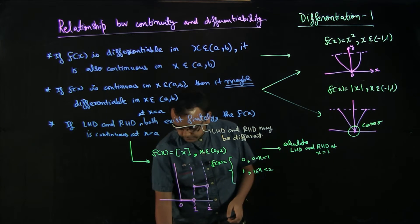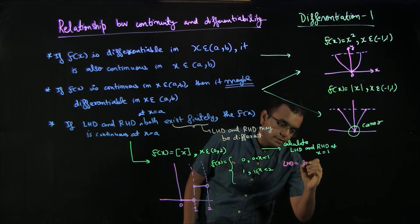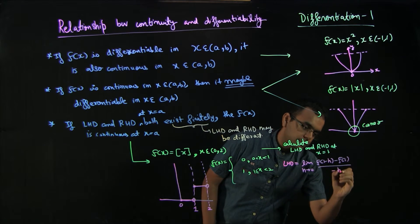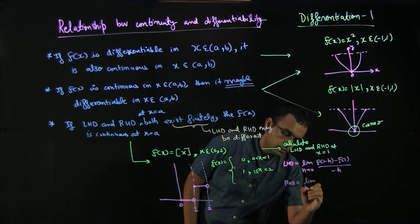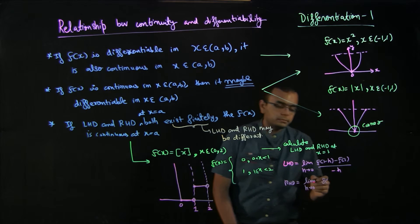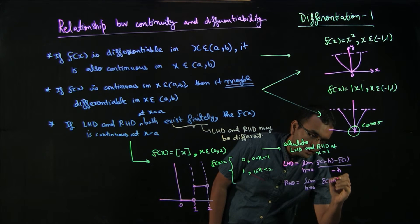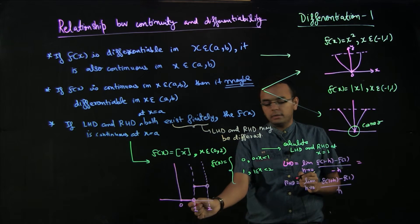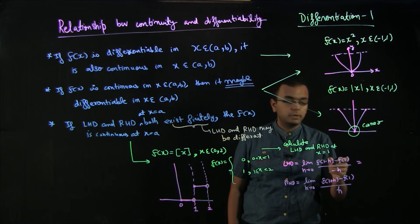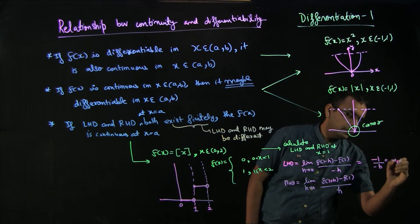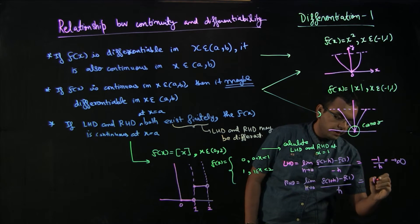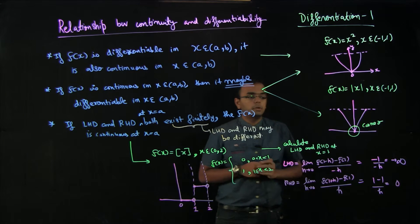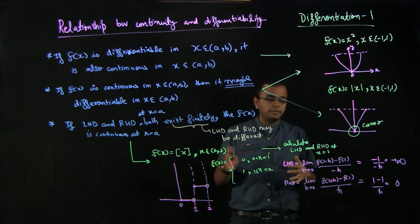LHD = lim(h→0) [f(1−h) − f(1)] / h. Since 1−h is slightly less than 1, f(1−h) = 0 and f(1) = 1, so LHD = (0 − 1)/(−h) = −1/(−h), which approaches infinity. For RHD, f(1+h) = 1 and f(1) = 1, giving (1 − 1)/h = 0/h = 0.